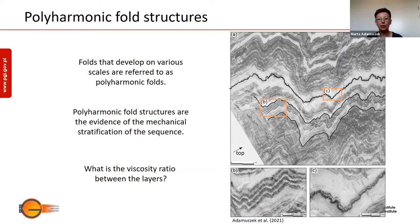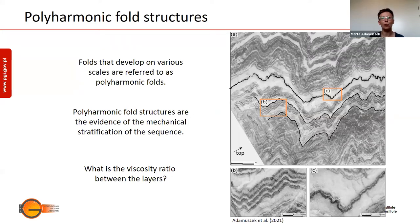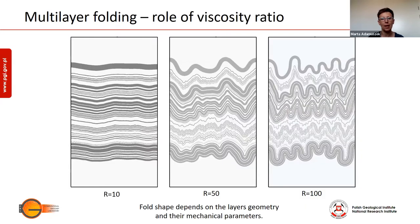We refer to the folds that develop at various scales as polyharmonic folds. The presence of polyharmonic folds is evidence of mechanical stratification. In this study, we want to investigate what is the viscosity ratio between these layers. But before going there, let's look at the role of viscosity ratio on the shape of developing folds in a multi-layer sequence.